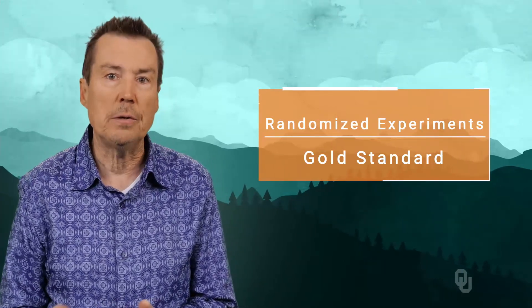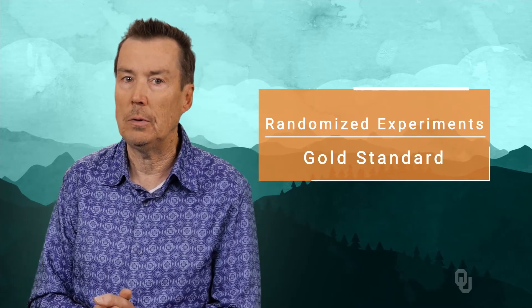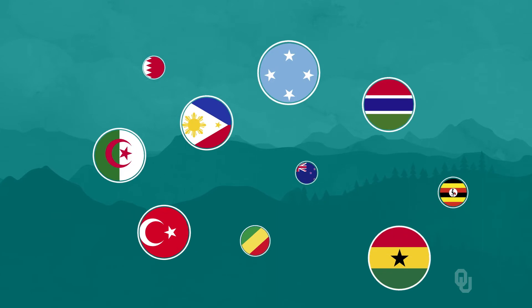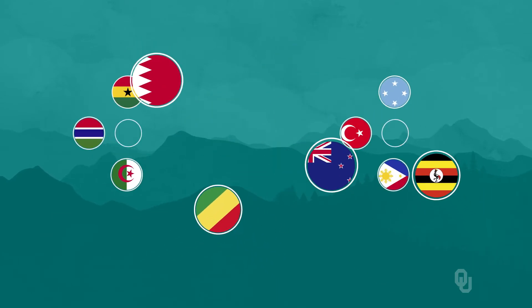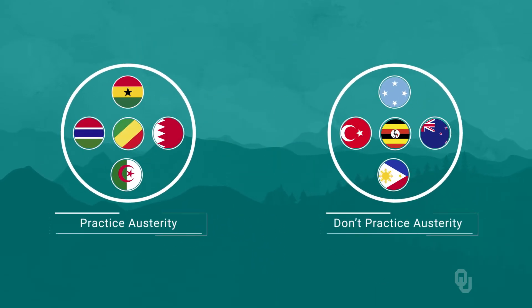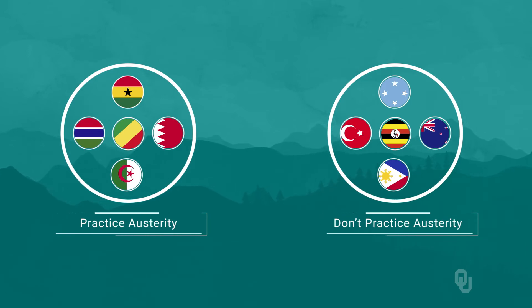But many important issues are not easily addressed with randomized experiments. For example, does fiscal austerity by governments improve economic performance in a crisis? This is a very important issue, but not at all amenable to experiments. Could you imagine the World Bank or the United Nations randomly assigning countries to practice austerity and others not to? The issues with national sovereignty would overwhelm the scientific validity of the approach.